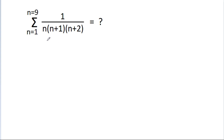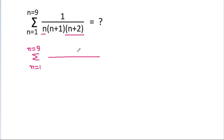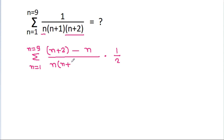So, if we subtract n from n+2, it equals 2. We can use this in the summation from n equal to 1 to n equal to 9. We divide by 2, giving us the expression over n times (n+1) times (n+2).